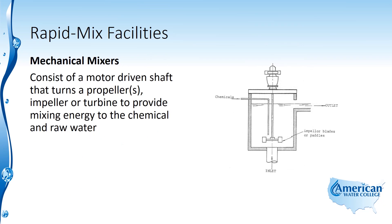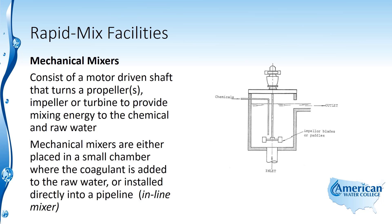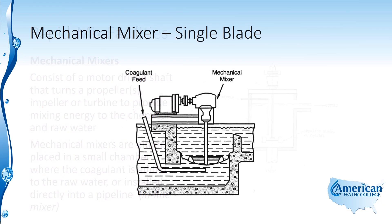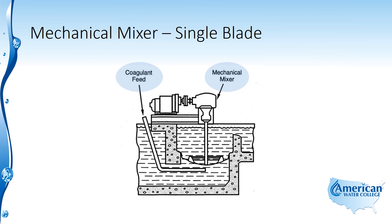Mechanical mixers consist of a motor-driven shaft that turns a propeller, impeller, or turbine to provide mixing energy to the chemical and raw water. They are placed either in a small chamber where the coagulant is added or installed directly into a pipeline as inline mixers. Mechanical mixers are commonly used because they are very easy to control in terms of mixing energy. Here you can see a single-blade mechanical mixer where the coagulant feeds right into the propeller and mixes with the water.